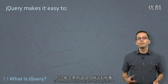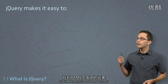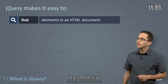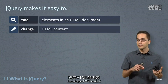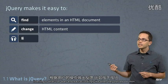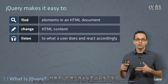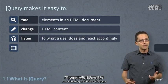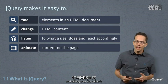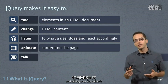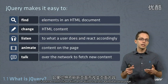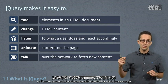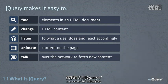Five common ways you might use jQuery include finding elements on an HTML document, changing that HTML content, listening to what a user does and reacting accordingly like when they press a button, animating content on the page, and talking over the network. So if you want to communicate with the server without having to refresh a whole browser page, you can do that with jQuery.